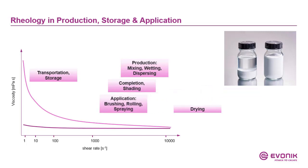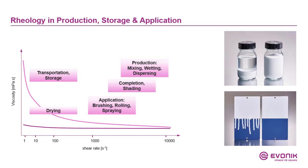During application, it depends on which process we use. Brushing and rolling will apply lower shear force to the coating than spraying will do, but this can be adjusted by using the right additive. During drying, we want to prevent the sagging of the coating — we do not want the coating running down or shifting within the film. So to apply thicker layers, we need high viscosity, and as no shear forces are applied, the viscosity will be high in this stage.